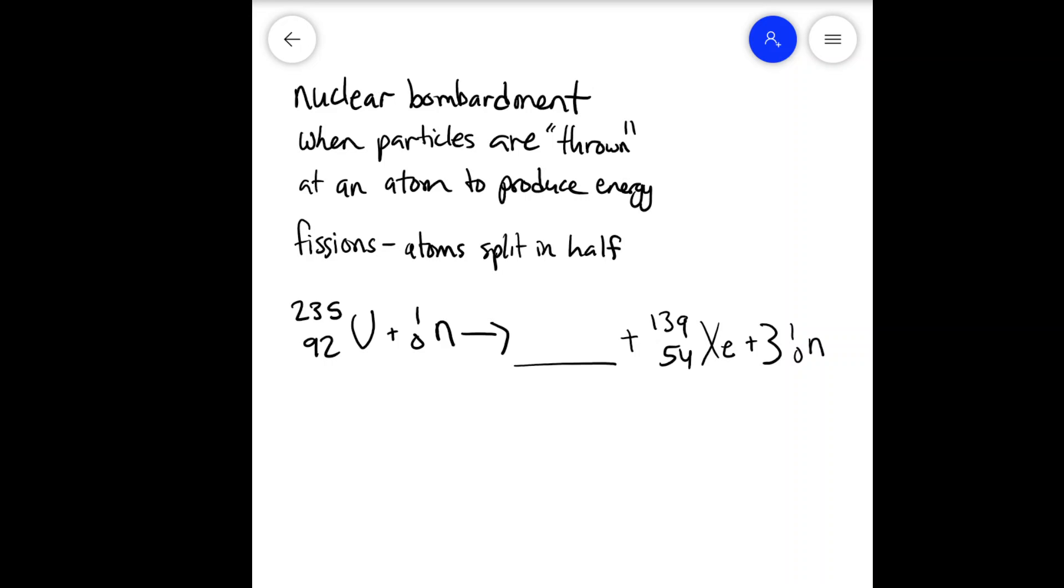54, what is 54? Sorry, 54, let's see, plus 3 neutrons. So if I zoom out, that's the equation we're giving and you have to fill in this blank.